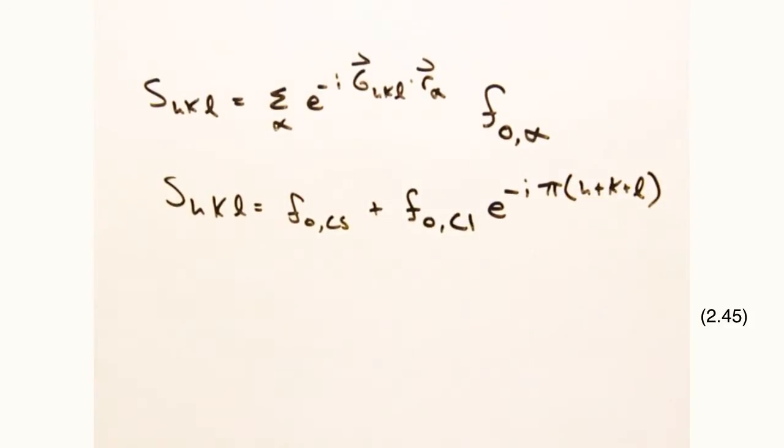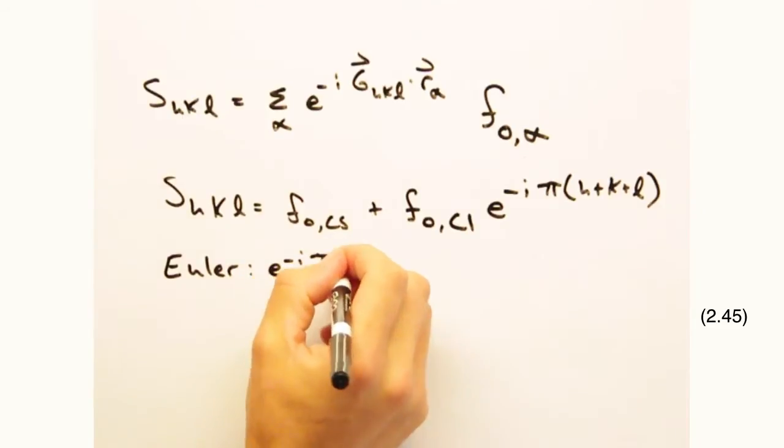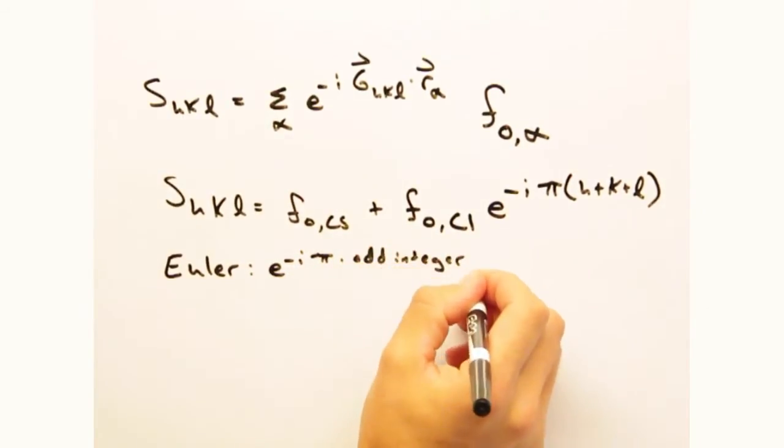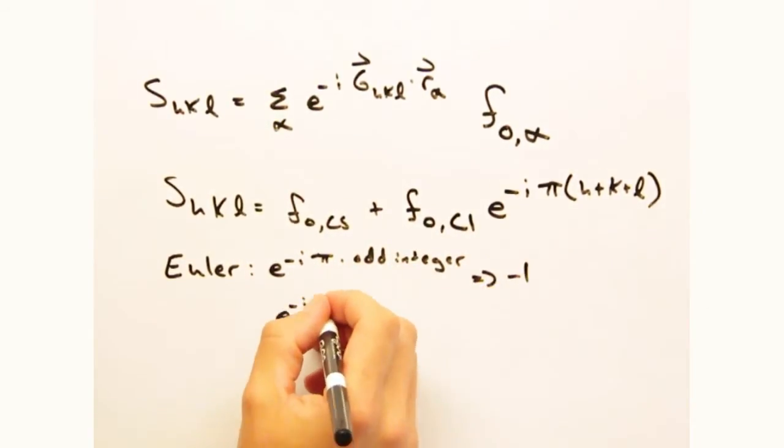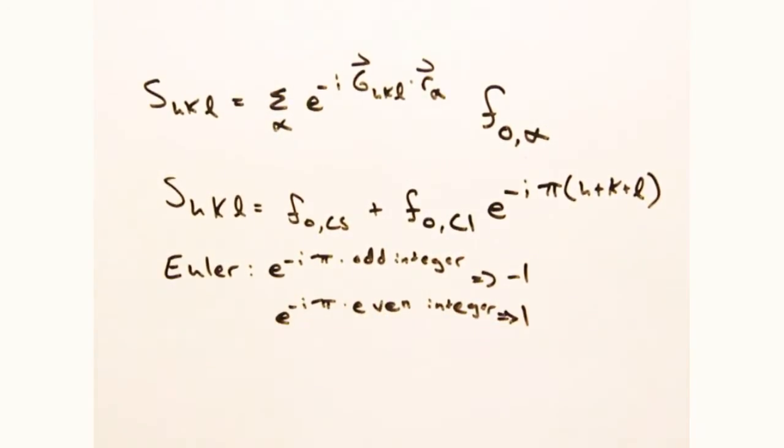And from Euler, we know e to the minus i times pi times some odd integer equals minus one, while e to the minus i times pi times some even integer equals one. All right, cool.